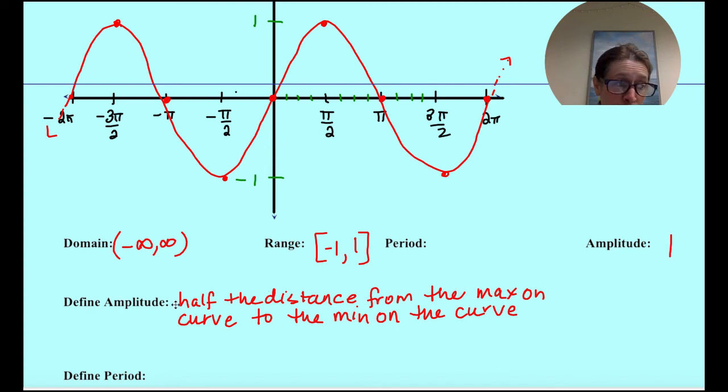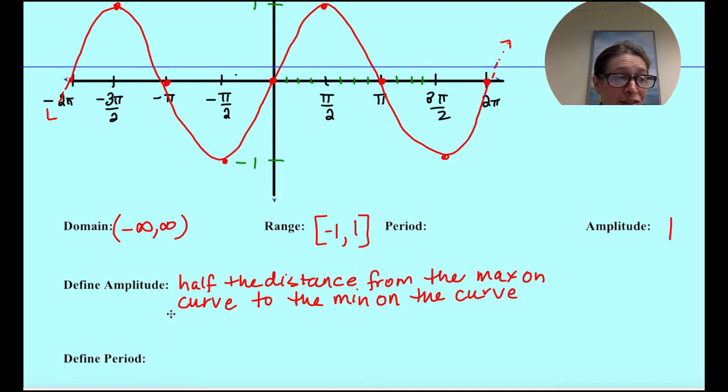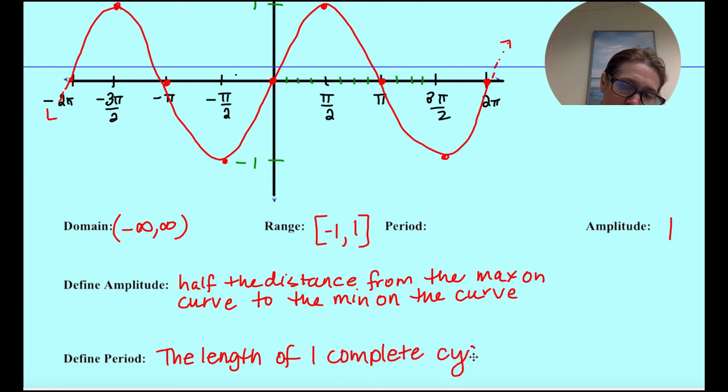Okay, the period, we talked about the fact that these are called periodic functions. The period is the length of 1 complete cycle. Now when we measure this, we start at 0, it goes through, down, up, it goes through 1 turn around the unit circle into pi, and then it's going to start to repeat. So the period of the basic sine graph of the parent graph would be 2 pi.